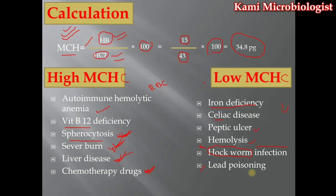Lead poisoning is also a main cause of low MCHC because lead can stop hemoglobin formation. When hemoglobin is not formed, the RBC size becomes small. These are the main causes and reasons for which MCHC becomes low or high. That's all about MCHC, MCV, and MCH. I hope you got an idea about these topics. Thanks for watching.